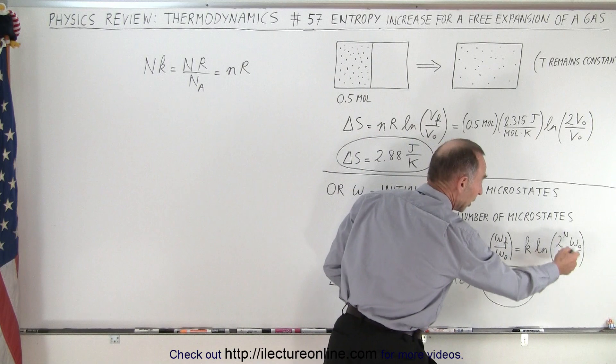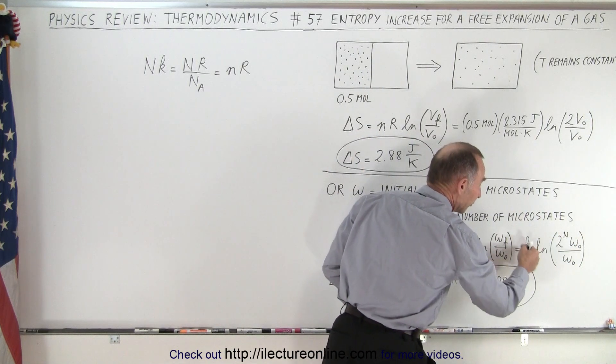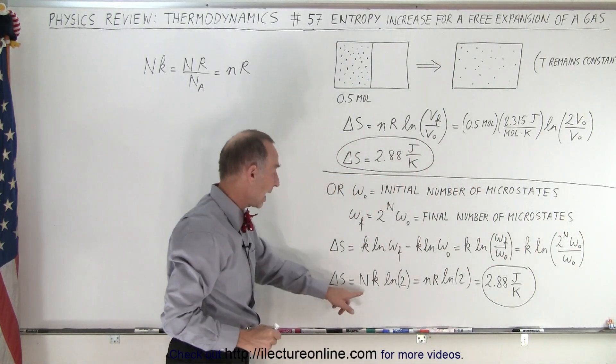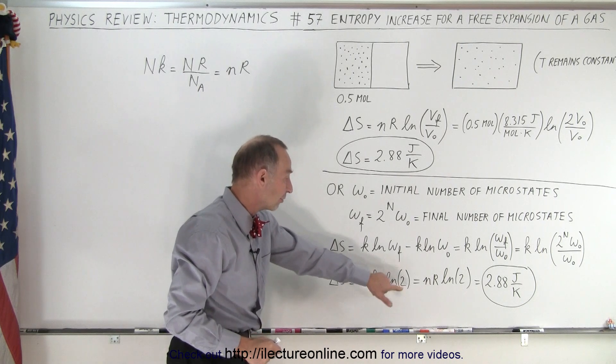Notice the omega initials cancel out. The n exponent can move to the front and so we now have n times k times the natural log of 2.